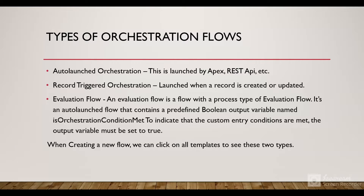There are two types of orchestration flows. First is auto-launched orchestration, launched by Apex, REST API, or any other tool. Second is record trigger orchestration, similar to a record triggered flow — launched when a record is created or updated. We also have a sub-flow called evaluation flow, which contains a boolean variable named isOrchestrationConditionMet. If the condition is met, that output variable must be set to true, and we can use this in the entry and exit conditions of steps or stages.